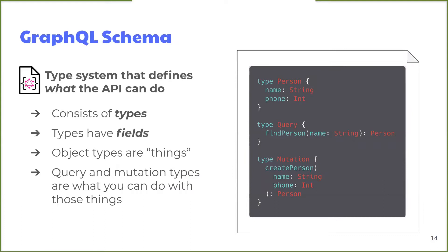The schema declaratively defines the API's functionality or what it can do. The schema is made up of types, and each type has one or more fields. A simple schema definition includes a few types: the first is a custom object type — an object is a unit of data which the API user can create or access. The second is a query type, which defines how data of the person type can be accessed. The third is a mutation type, which defines how data of the person type can be created or changed. The code only shows what data types are defined and what the API can do, but says nothing about how those things are done — that's the job of resolvers.